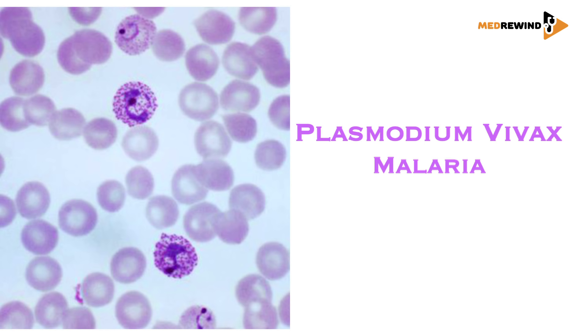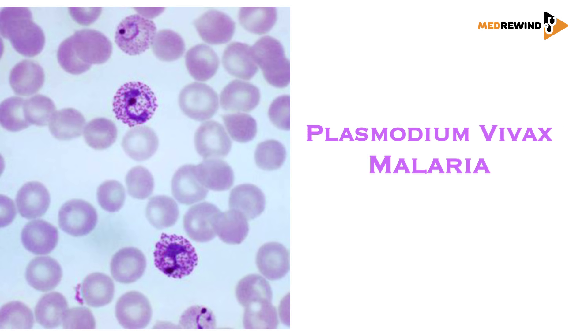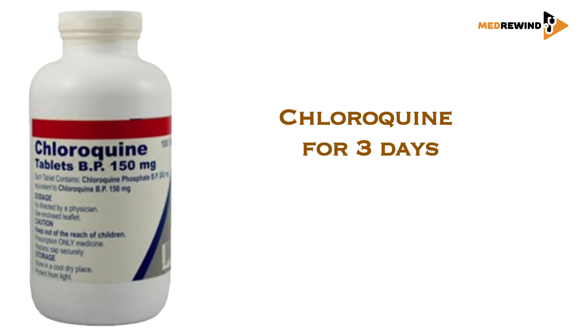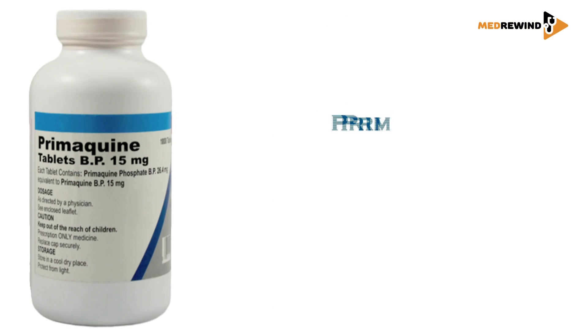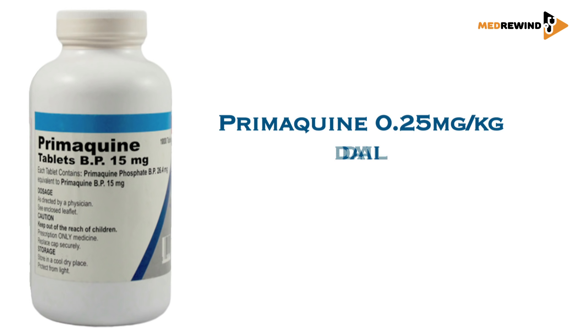For vivax malaria, the treatment of choice is chloroquine — a three-day regimen giving a total of 25 mg/kg: typically 10 mg/kg on day one, 10 mg/kg on day two, and 5 mg/kg on day three. Along with chloroquine, we also give radical treatment in the form of primaquine, which must be given for 14 days.